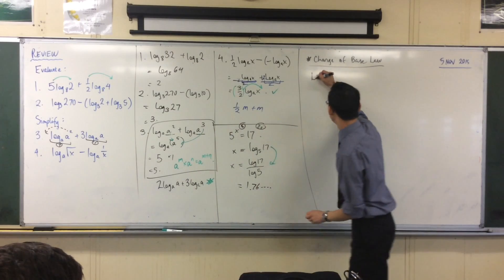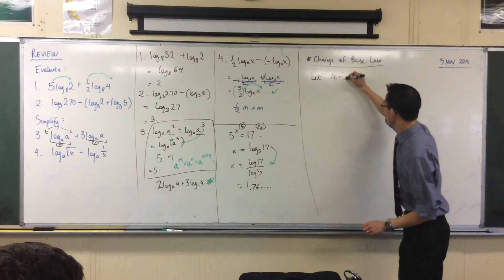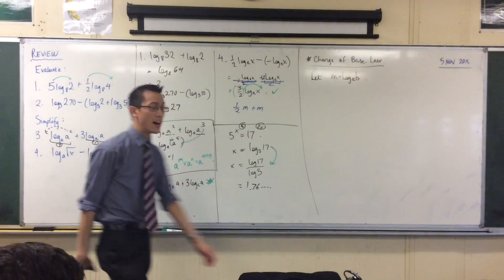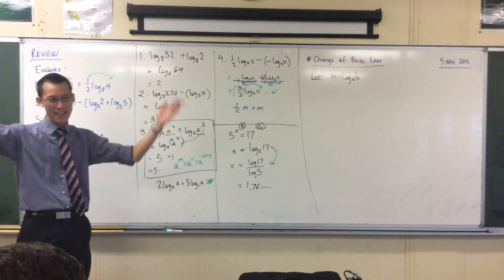We're going to say, let this equal this. Now, this looks really hard because, like, I don't know what M is. I don't know what A is. I don't know what B is. But that's powerful. When you don't know what a number is, the number can be anything.